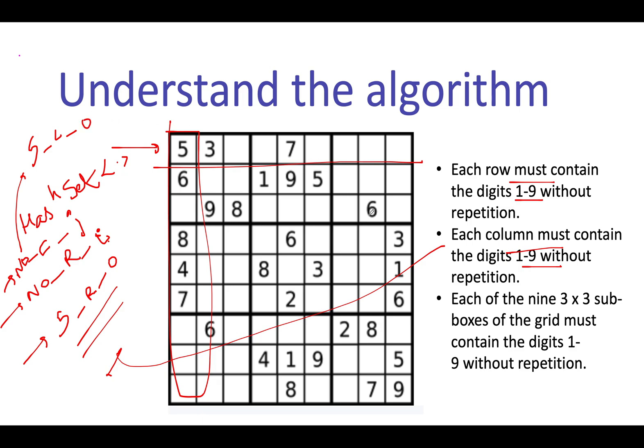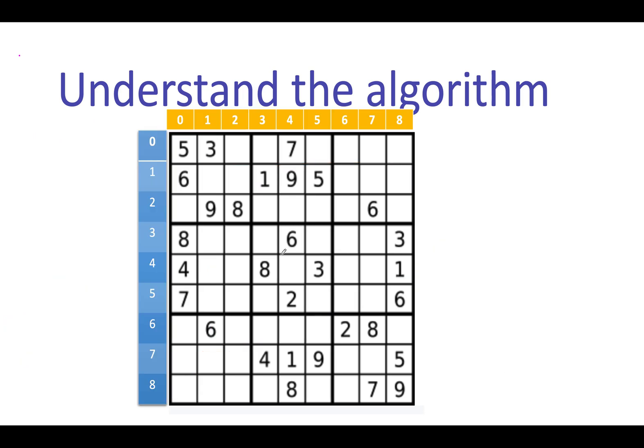Now let's talk about the third case: each of the nine 3x3 sub-boxes of the grid must contain digits 1 to 9 without repetition. This particular box should not have any repeated element in it, similarly for the rest of the boxes. So how can we identify the position of this particular box?